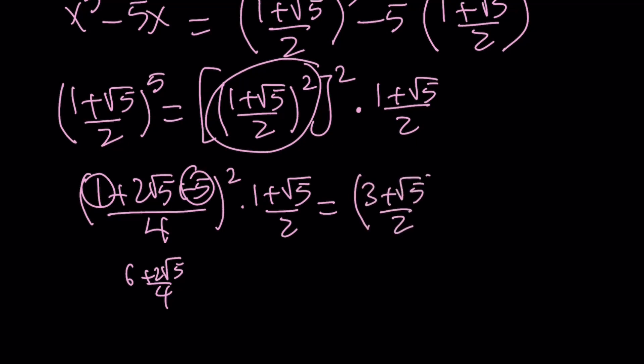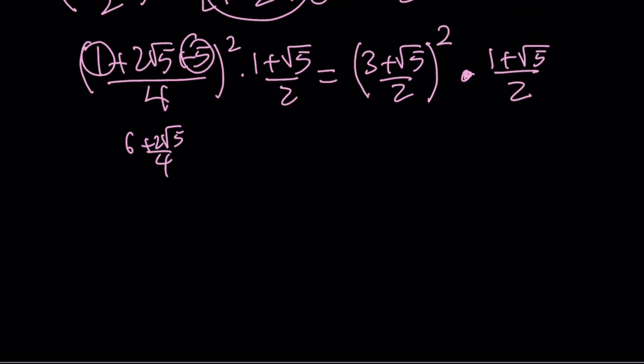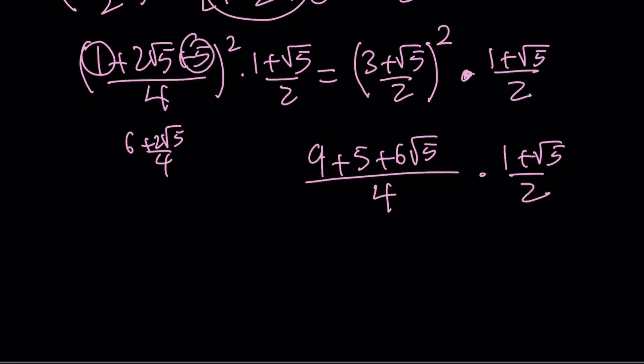But again, that needs to be squared one more time because we're looking at the 5th power, which contains the 4th power. So now I've squared that again. You're going to get 9 plus 5 plus 6 root 5. This time I just switched the order. It doesn't matter. Times this. We're getting there. And now 9 plus 5 is 14. 14 plus 6 root 5. And we can divide everything by 2. That gives us 7 plus 3 root 5 over 2 multiplied by 1 plus root 5 over 2.